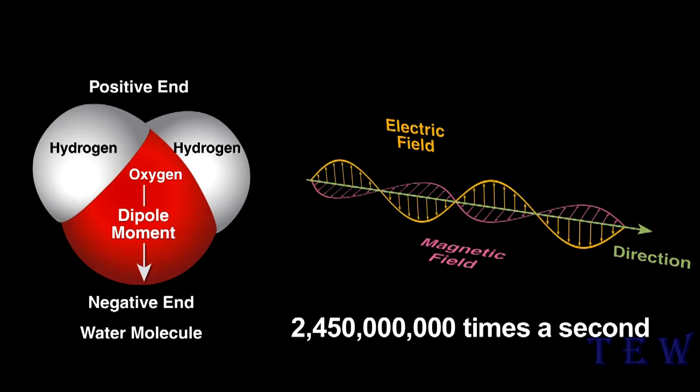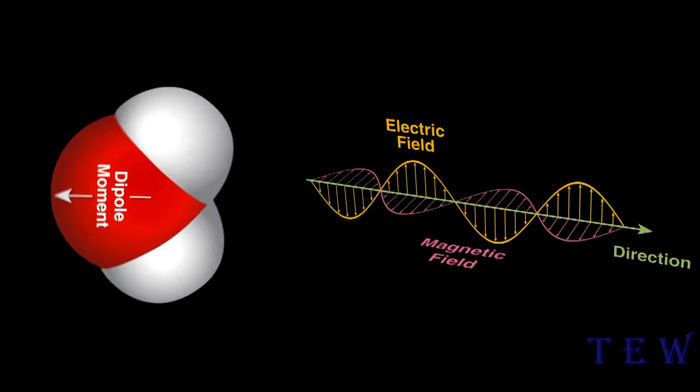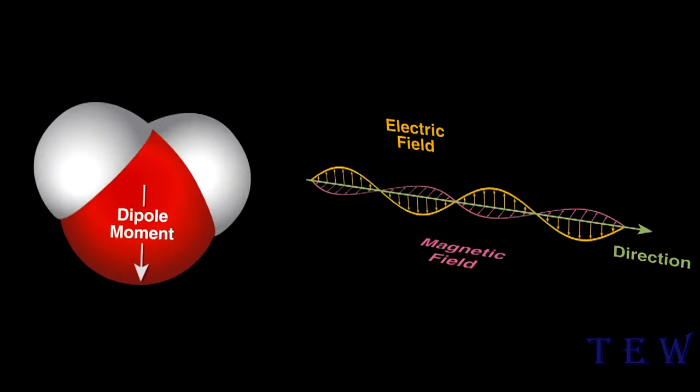For this oven, the direction of the fields change 2.45 billion times per second. Water will try to align with the radiation's electric field. The changing field rocks the water molecules back and forth rapidly, and molecular friction from this creates heat as the motion disrupts the hydrogen bonds between neighboring water molecules.